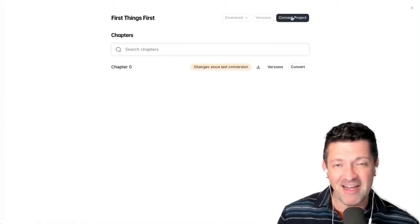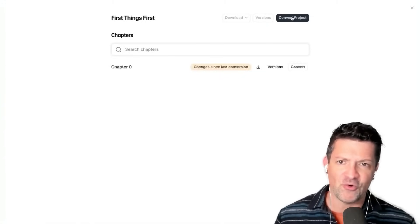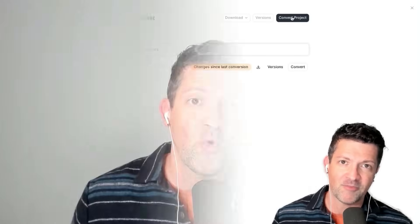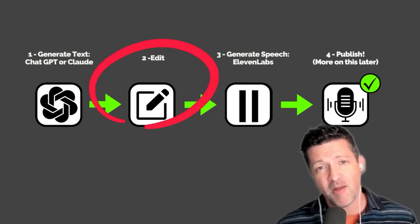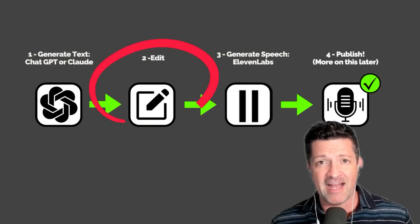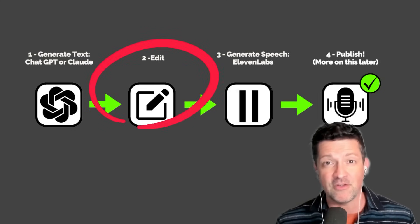Once you've fixed all those weird freakouts — and really there shouldn't be that many, there were only a couple in that entire 30-minute podcast — you can then convert the project and download it and upload it into the podcast distributor of your choice. If you don't know how to do that, I'm going to give you some information on that at the end of the video. That's the quick start overview, but there are a ton of ways you can customize this and have maximum control that you really can't achieve inside Notebook LM.